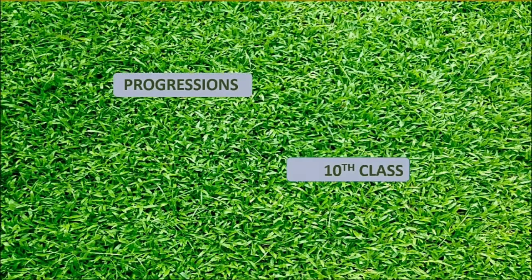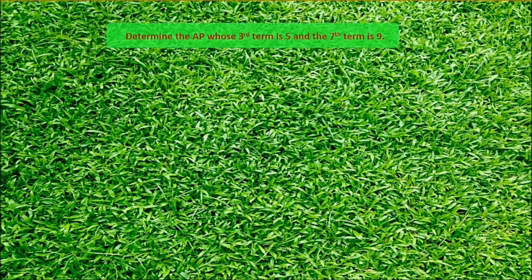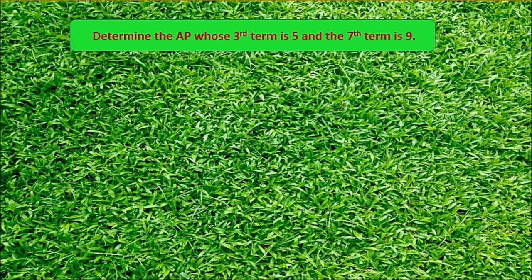In 10th class progressions lesson, let's solve a problem. The problem is: Determine the AP whose 3rd term is 5 and the 7th term is 9.